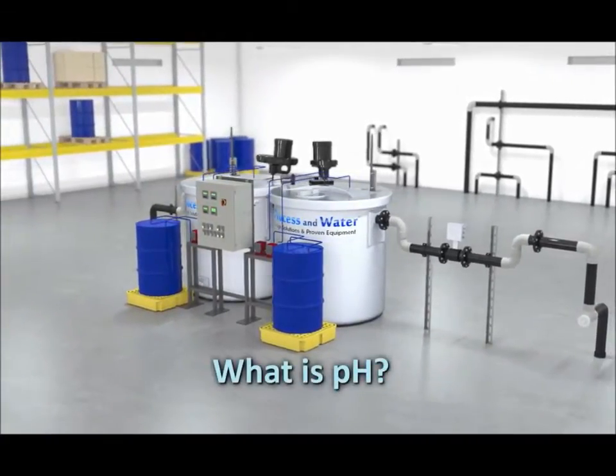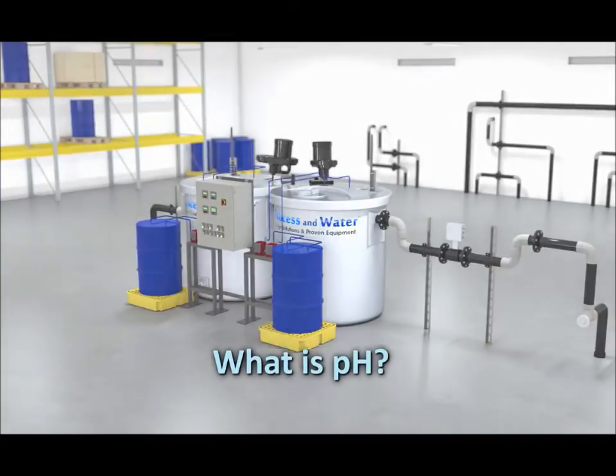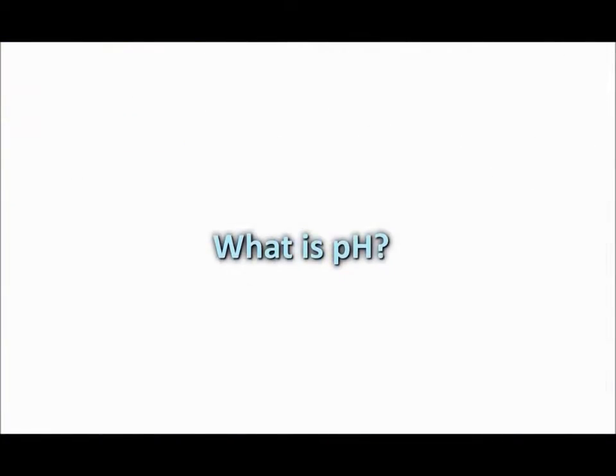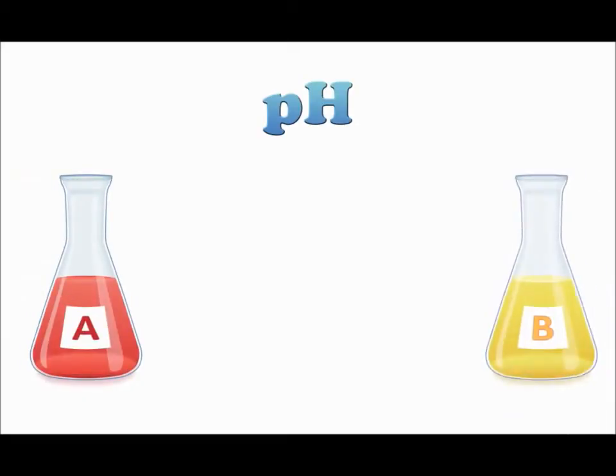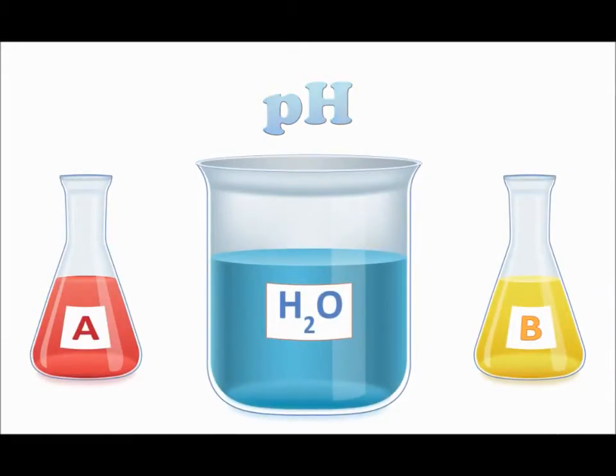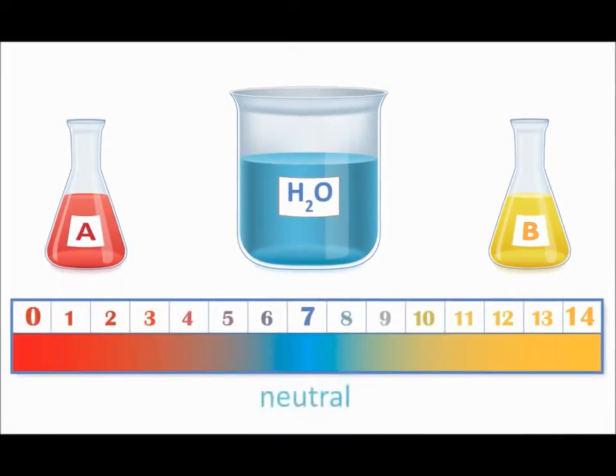What is pH? In more practical terms, although not technically correct in all cases, pH is the measure of acidity or alkalinity of water. Measured on a scale of 0 to 14, solutions with a pH of less than 7 are acids, while solutions with a pH of greater than 7 are bases.